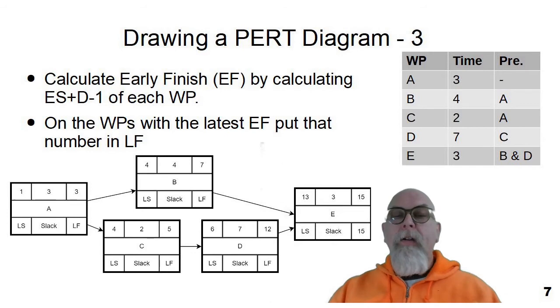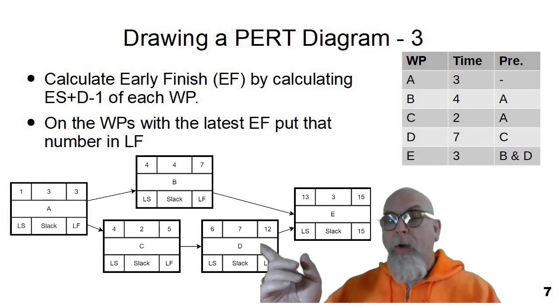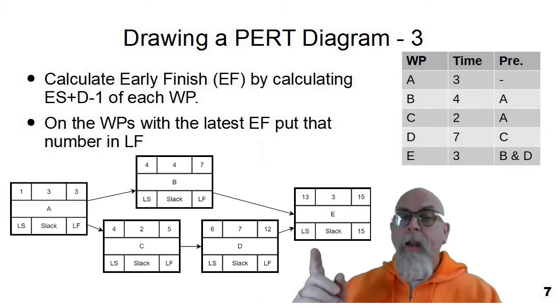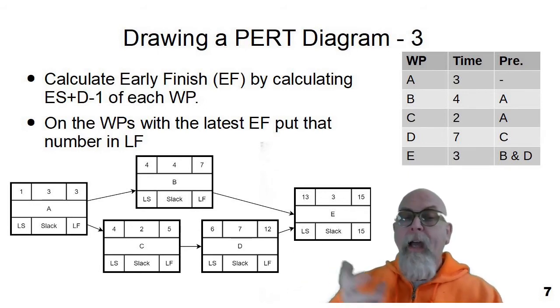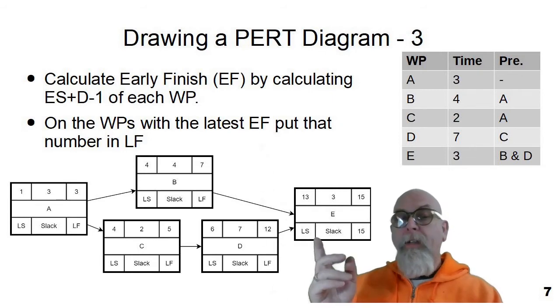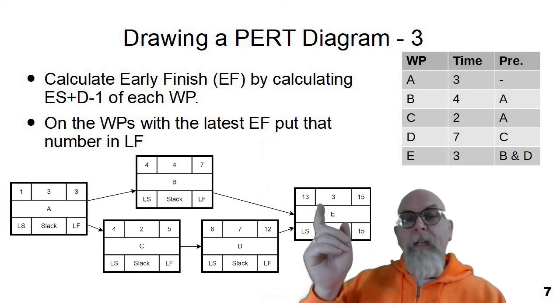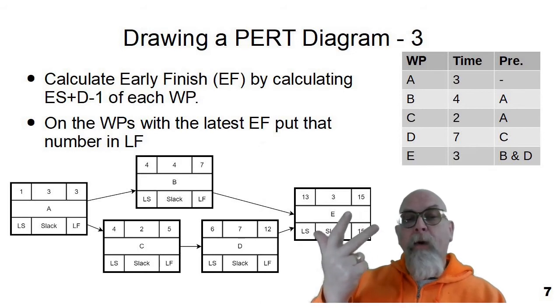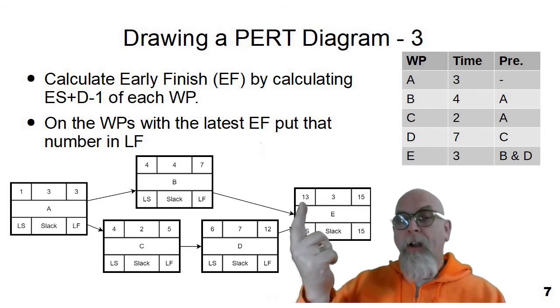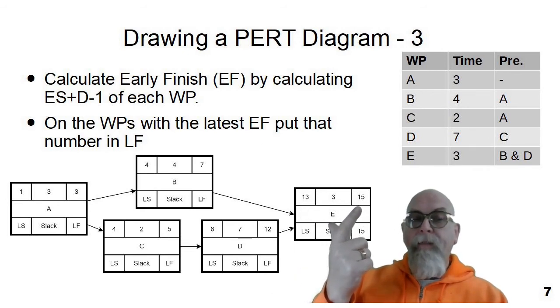Now that we've calculated early starts, let's calculate early finishes. We basically just go to each box and take the early start plus the duration minus one and write that as the early finish. I went through the whole network and just took this plus this minus one. We start on day thirteen, work on day thirteen, work on day fourteen, work on day fifteen. So we will finish it on day fifteen at the end of day fifteen.